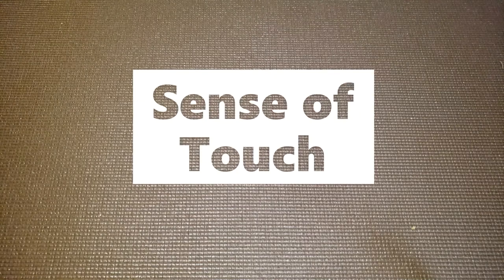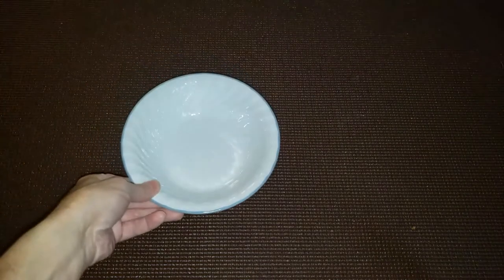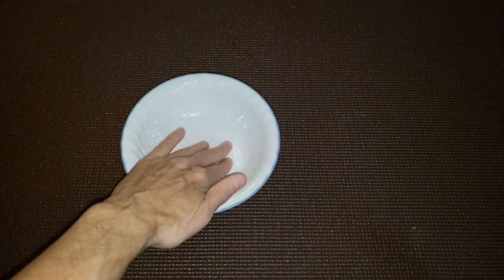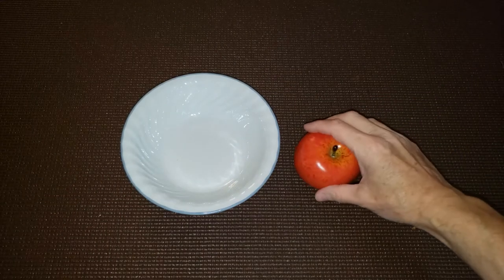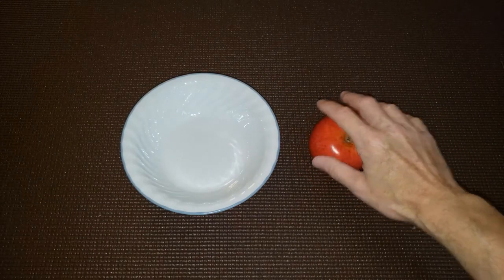You can help a child explore their sense of touch by asking them to find things with different textures. For example, you could ask: can you find something that's smooth? And the child could find something like a bowl that's very smooth, or perhaps a piece of fruit like an apple that's very smooth.